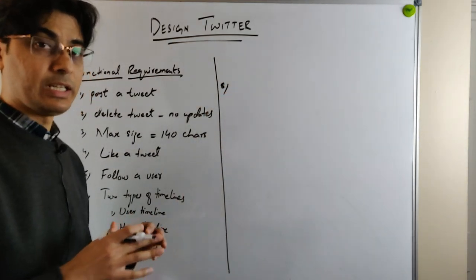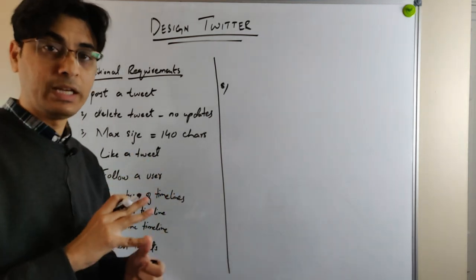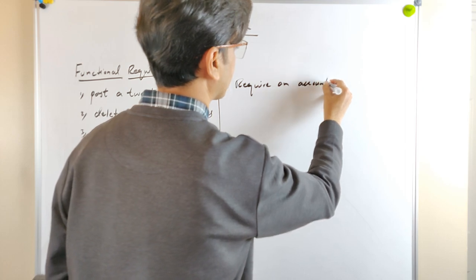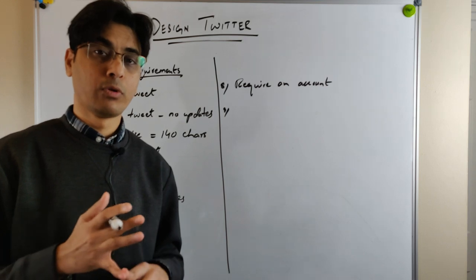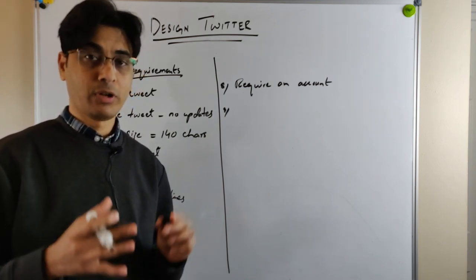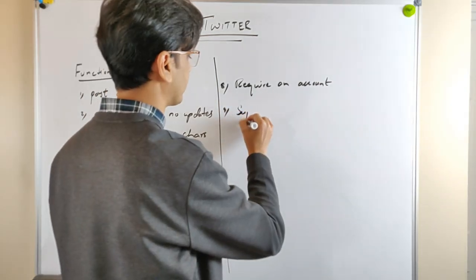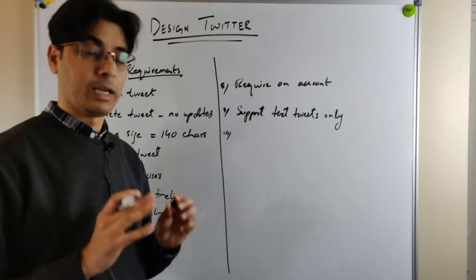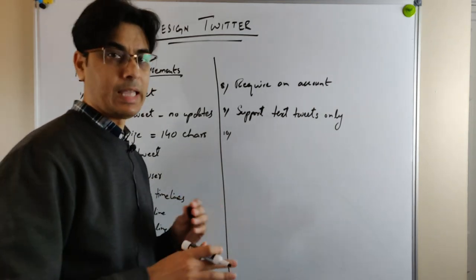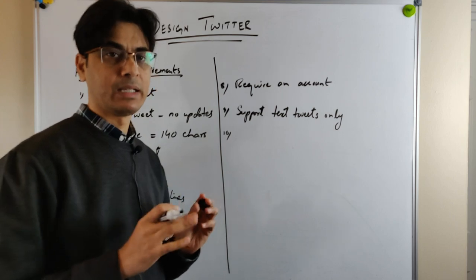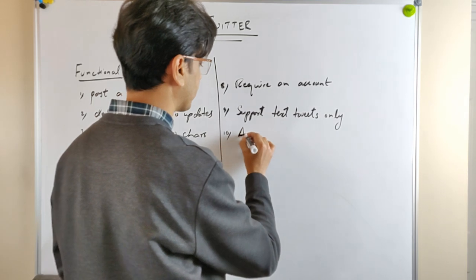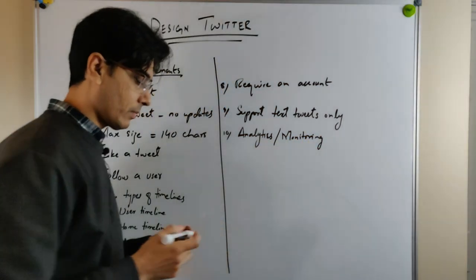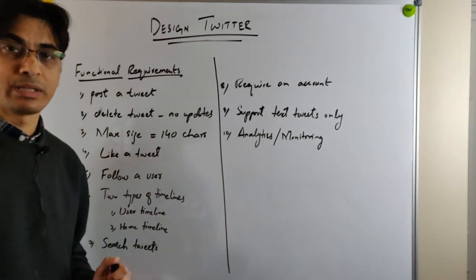The eighth requirement is that we need a user to have an account in the Twitter service in order to either read or post tweets. Although Twitter supports both text tweets and video and images, for this video we are going to support text tweets only. There will always be an analytics or monitoring component — you need to remember that there should always be an analytics and monitoring component in every service we design.